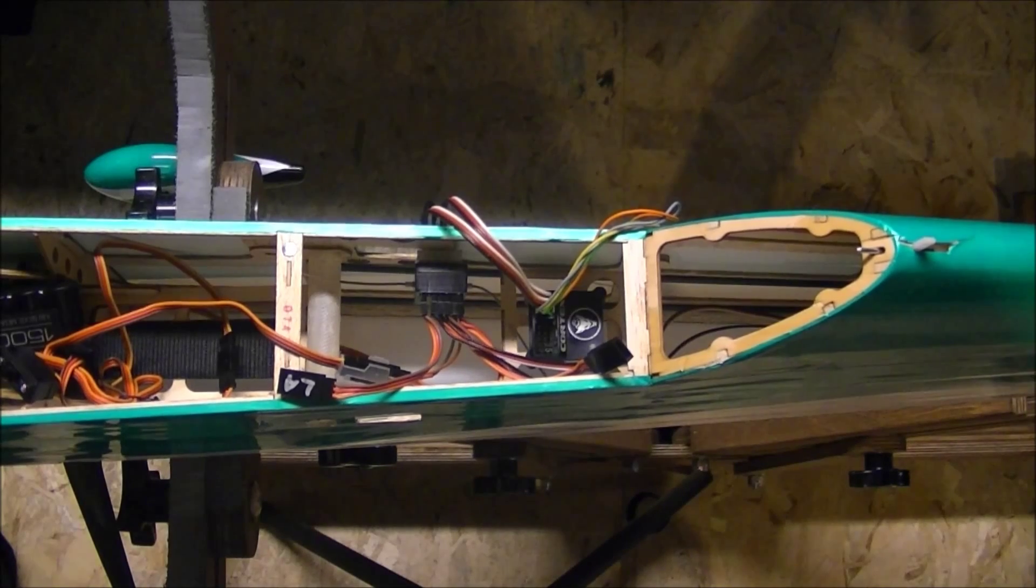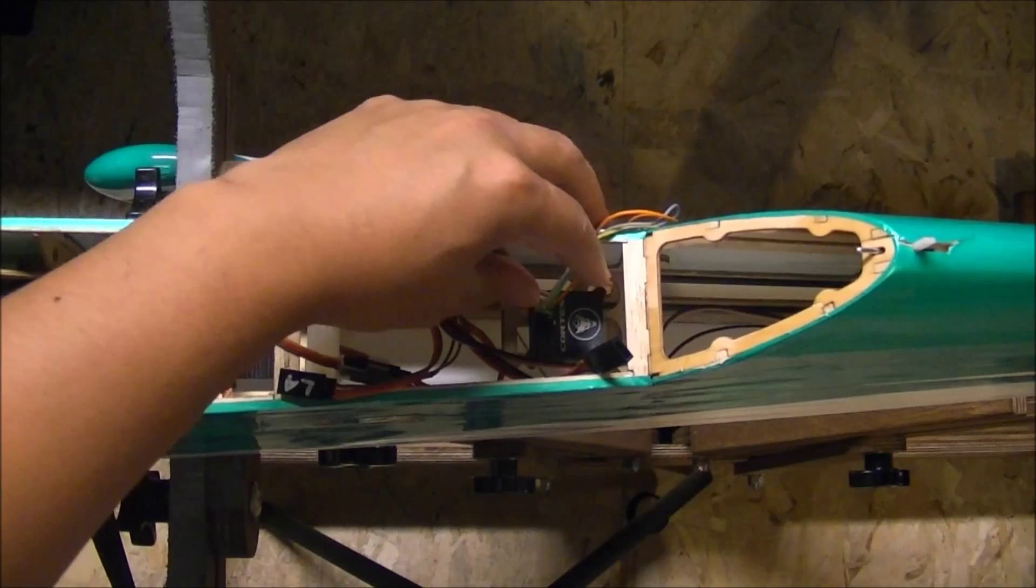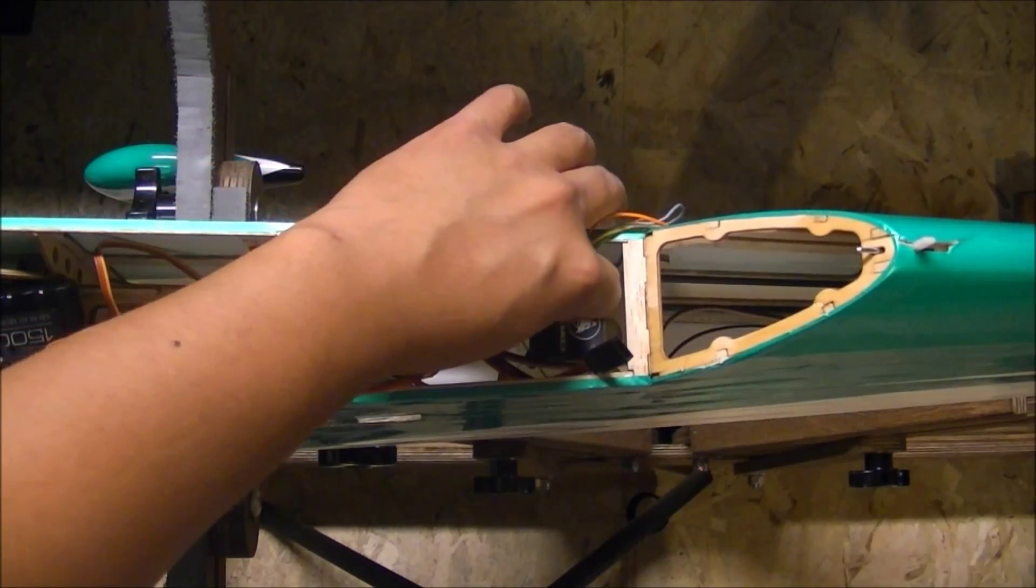Because once the Cortex turns on, it could mask some trim issues or CG issues. I'm using the wire loom because I'm not using a satellite receiver or S-Bus. So I'm going to plug the wire loom into the plug bank on the right.